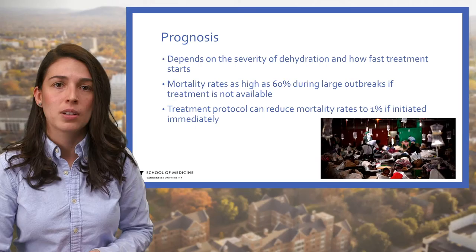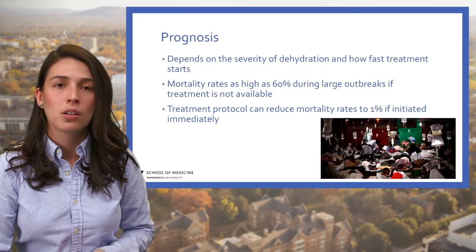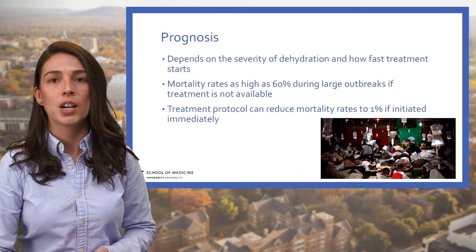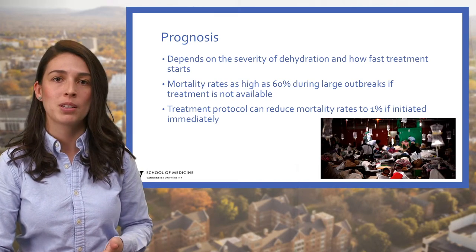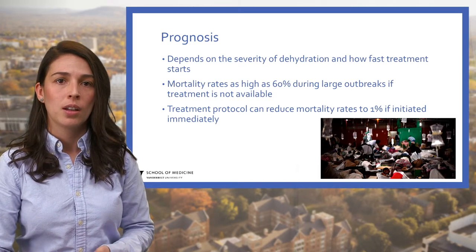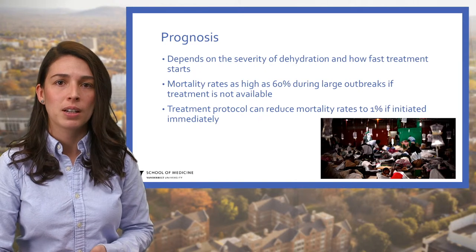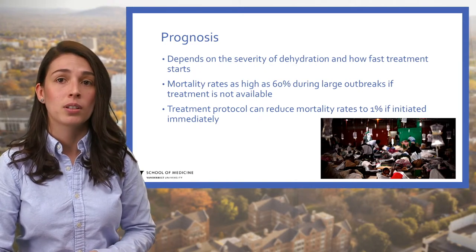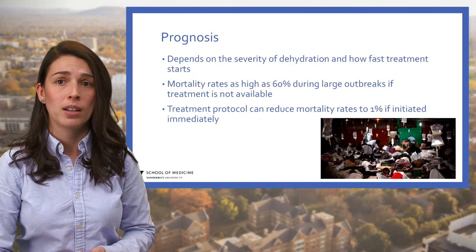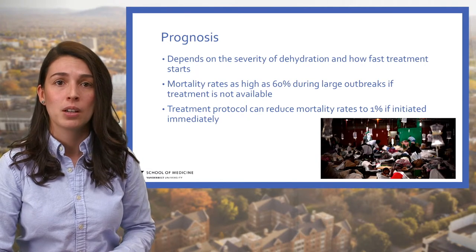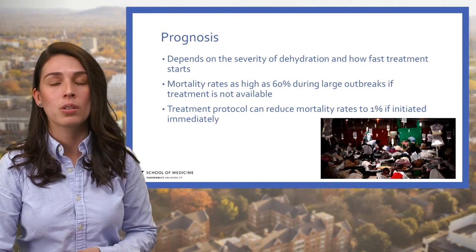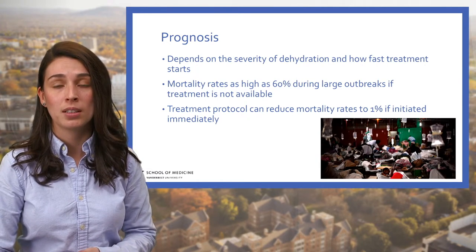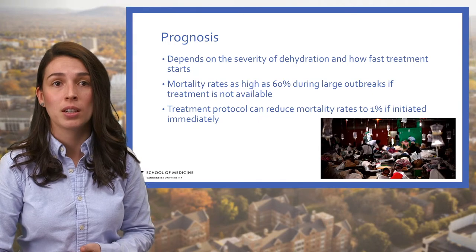Cholera prognosis depends on the severity of dehydration and how fast treatment starts. Mortality rates are as high as 60% during large outbreaks if treatment is not available. However, treatment protocols can reduce mortality rates to 1% if initiated immediately.